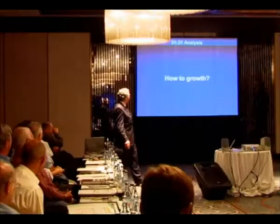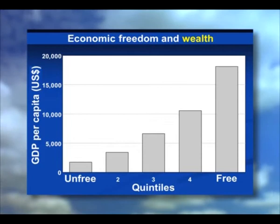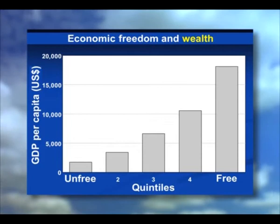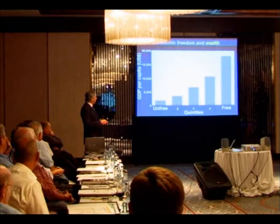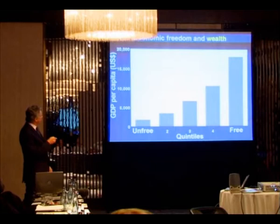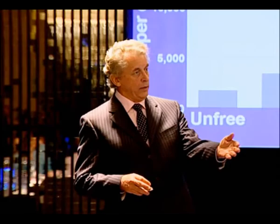So the issue then becomes: how do you become wealthy? How to get the economy to grow is basically this — you leave it alone. These are the world's countries divided into quintiles, five groups, with freer economies here and less free economies here. By the way, these are free economies, not free countries — this is not talking about political or democratic freedom or civil liberties. It's talking about the economic system. Richer countries have freer economies. Now, this doesn't tell you why they become rich; it could just mean that when countries are rich, they free up their economy.